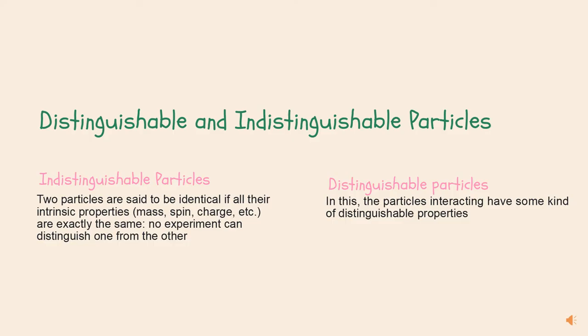Distinguishable and indistinguishable particles. Here, as the name suggests, indistinguishable particles are those particles that have similar mass, spin, charge, etc., physical properties. Differences cannot be made on the basis of their physical properties. Differences can be made in between distinguishable particles.